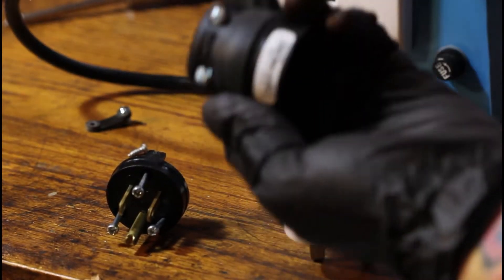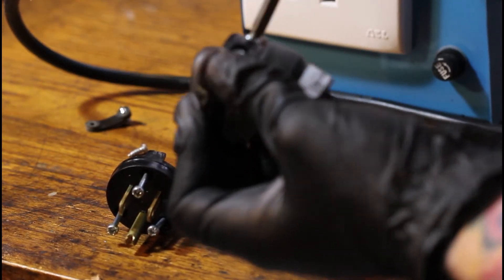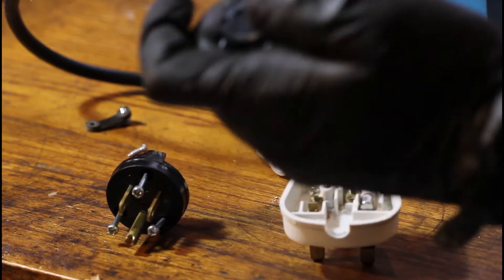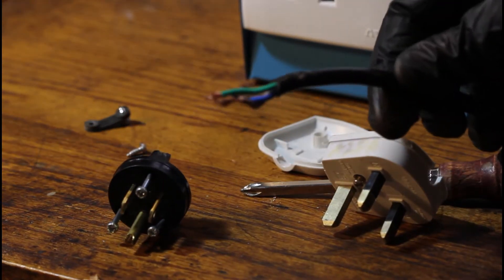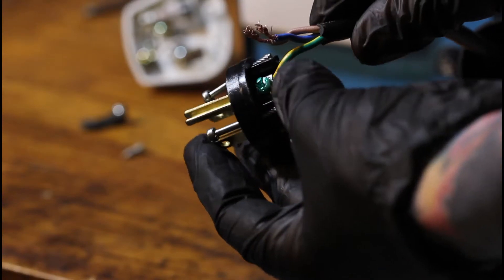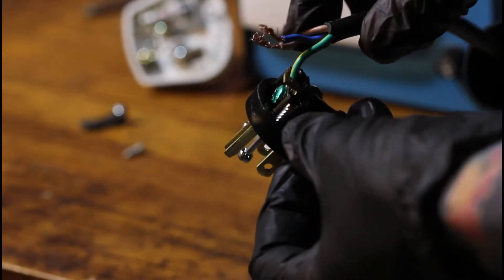Now you take the sleeve, make sure that's all unscrewed so you can slide the wire through. Once it's through you will spread the wires slightly and then you will insert them.